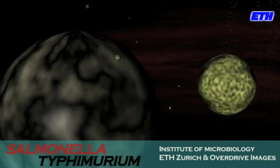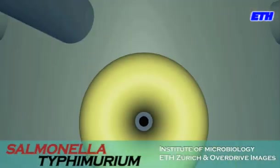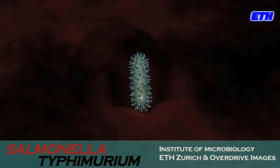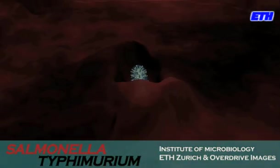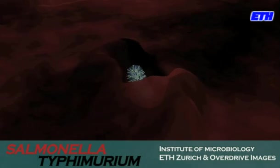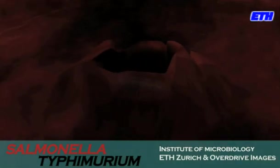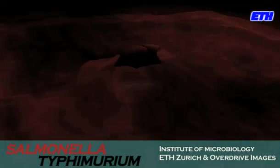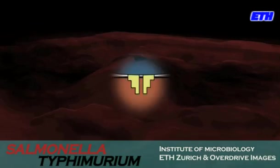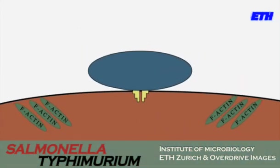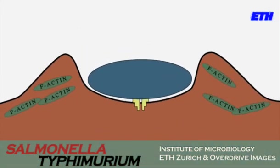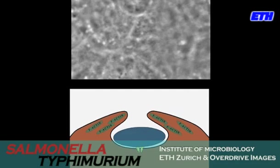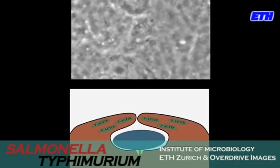The injected Salmonella effectors activate specific host proteins, which induce pronounced changes of the host cytoskeleton. As a result, the epithelial cell membrane extends outward. This ruffling process leads to the engulfment of the invading bacterium, until it is taken up completely into the interior of the host cell.